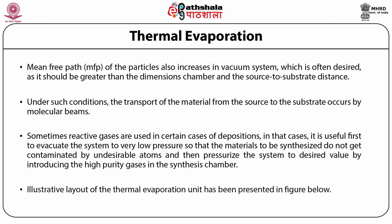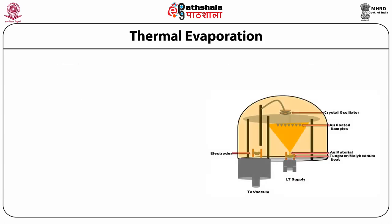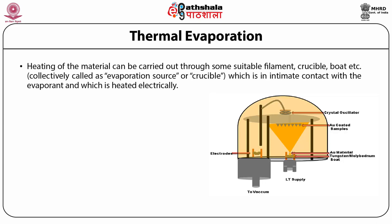The illustrative layout of the thermal evaporation unit has been presented in the figure. It shows the crystal oscillator for monitoring the thickness of the deposited film, copper coated samples, and — for example — gold material to be evaporated which is kept in a tungsten or molybdenum boat. You can see the electrodes, the vacuum inlet, and the low tension supply.